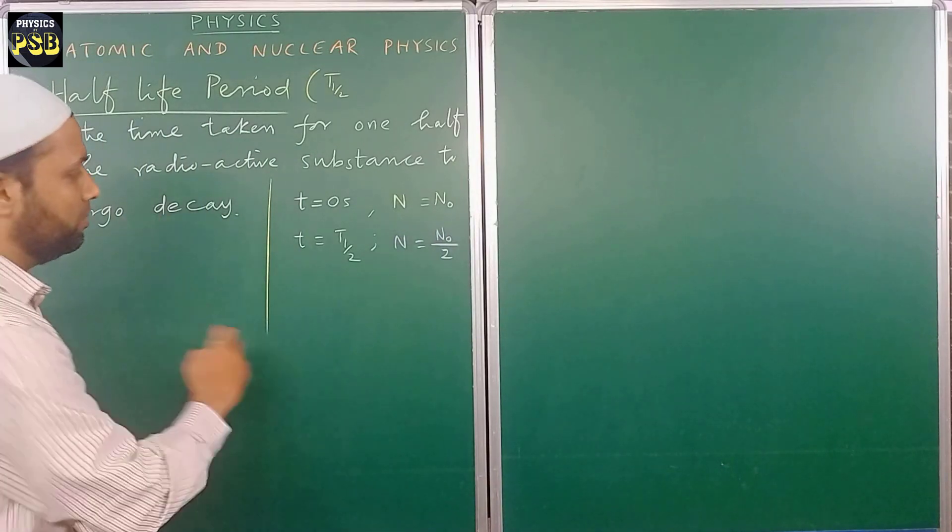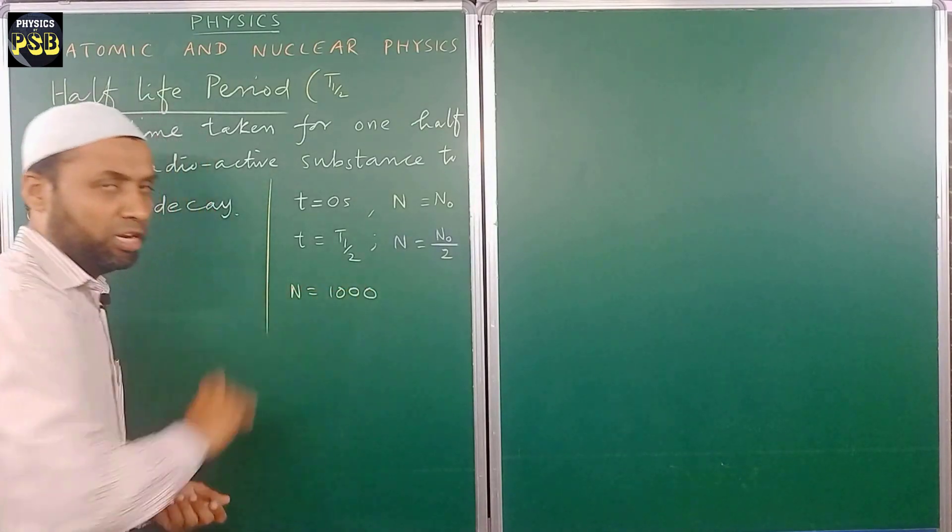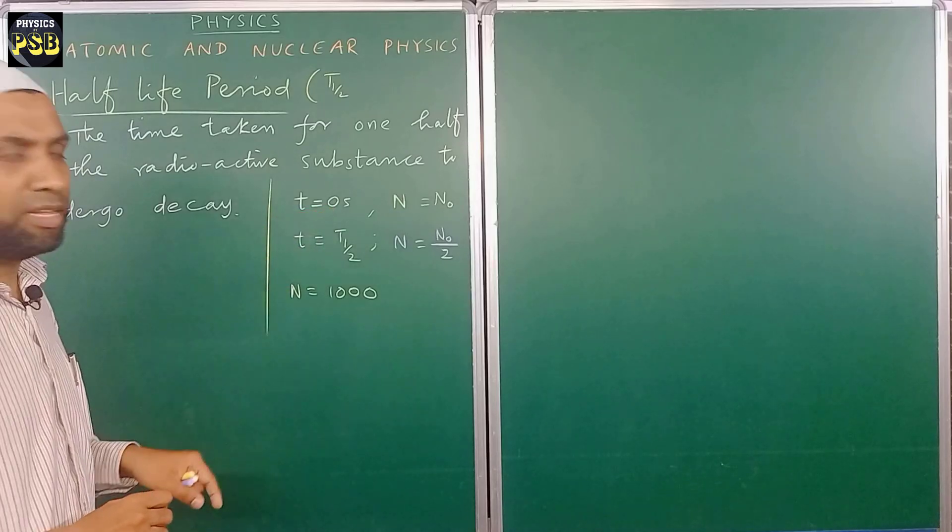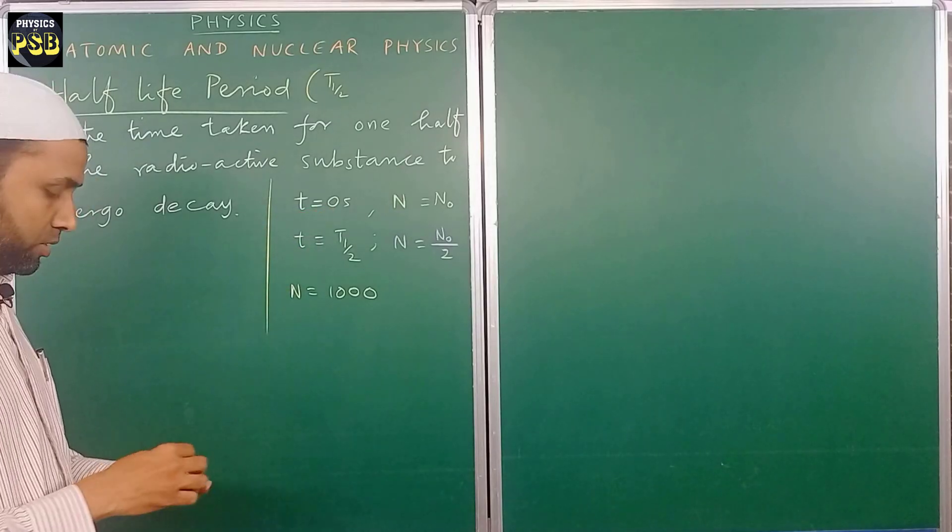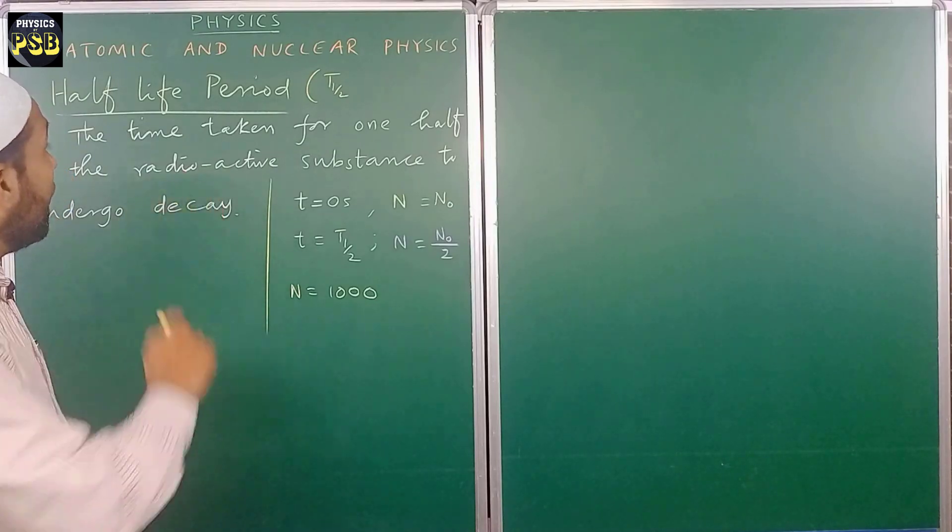At time t equals zero seconds, I will give one numerical example. Suppose there were 1000 atoms present initially at t equals zero seconds. The value of N is N naught.